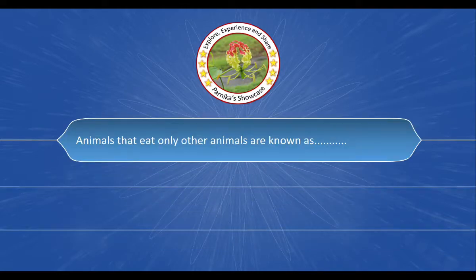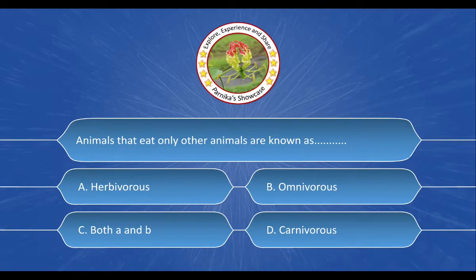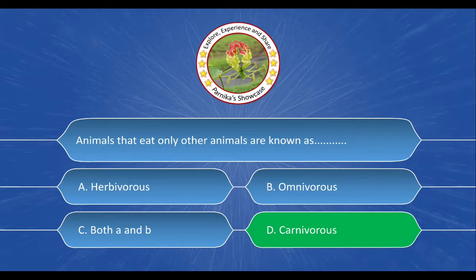Next question: Animals that eat only other animals are known as dash dash. The options are A. Herbivorous, B. Omnivorous, C. Both A and B, D. Carnivorous. And the correct answer is option D. Carnivorous.